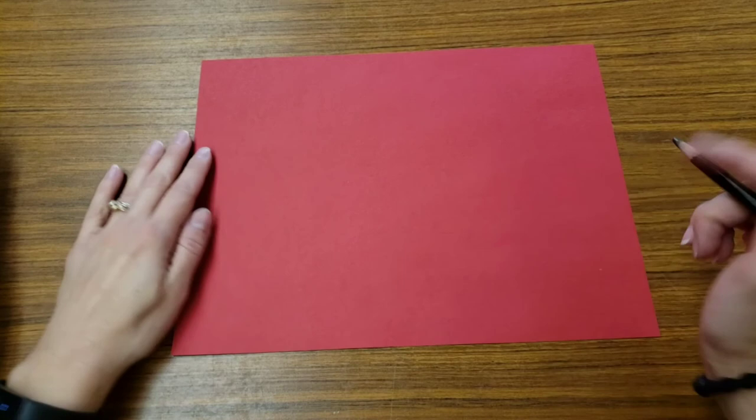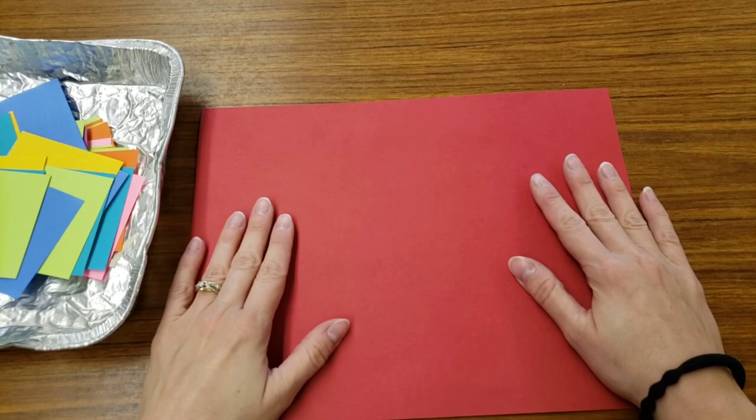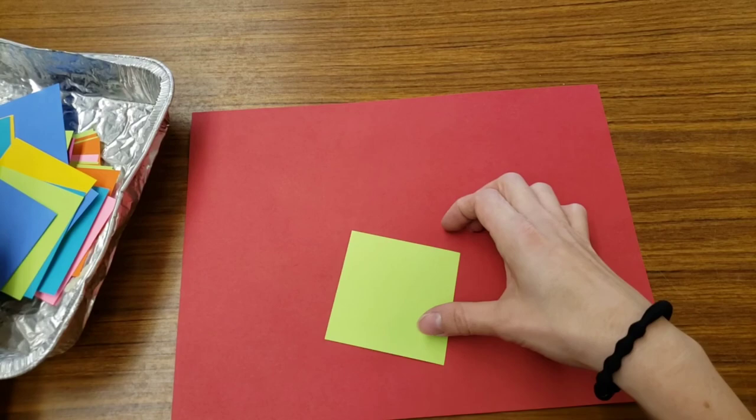You will all have a big piece of paper. I need you to write your name on that piece of paper and flip it over. Your table will have a pan full of lots of squares. Now you heard me say this will be made from squares, triangles, and rectangles.